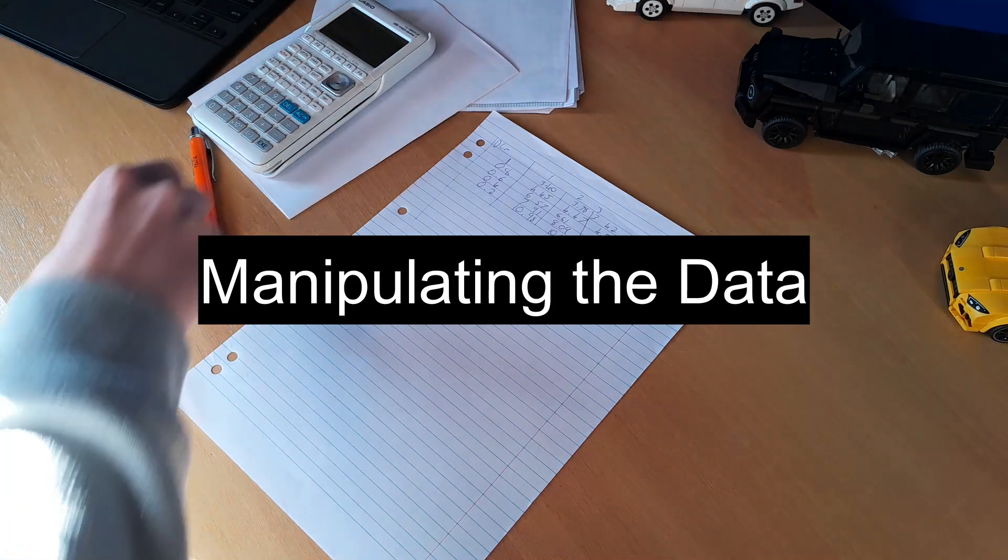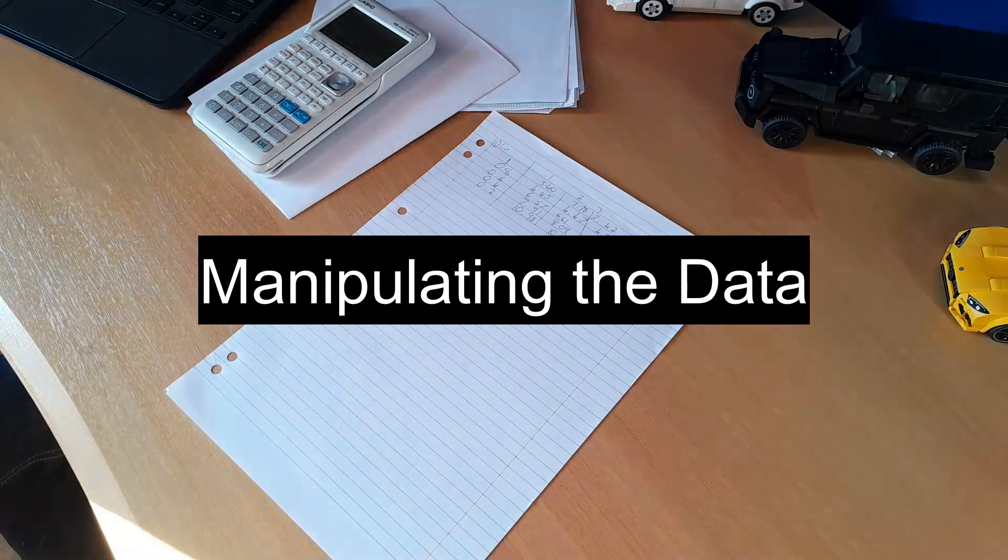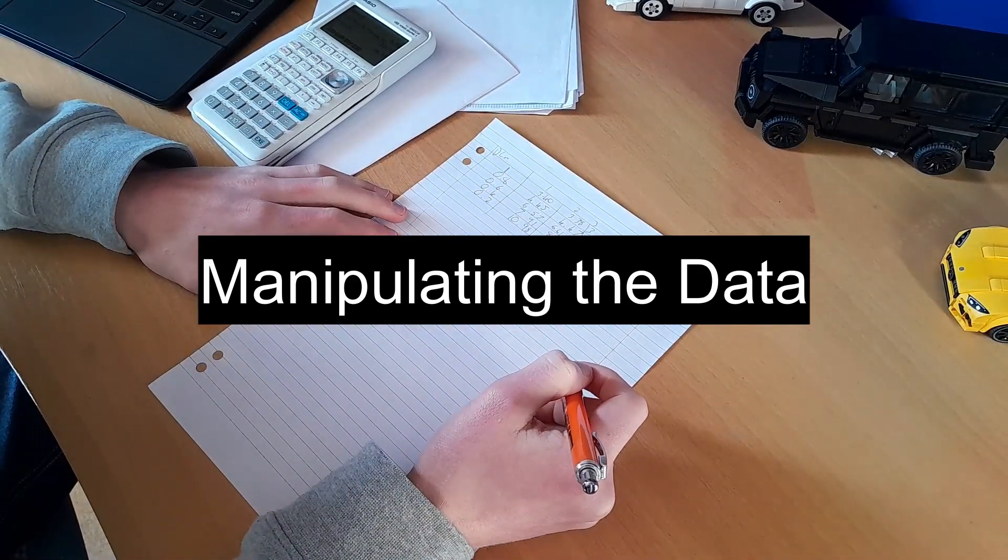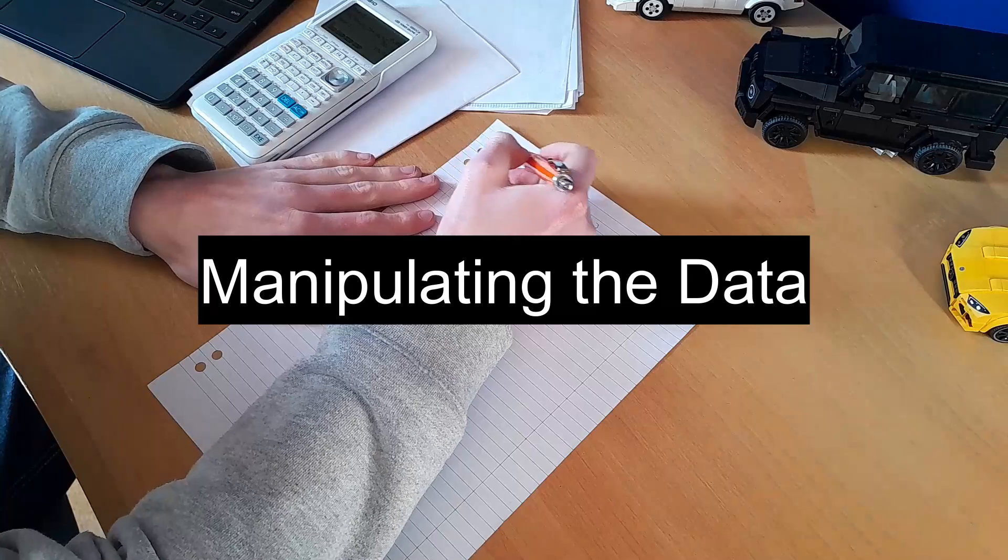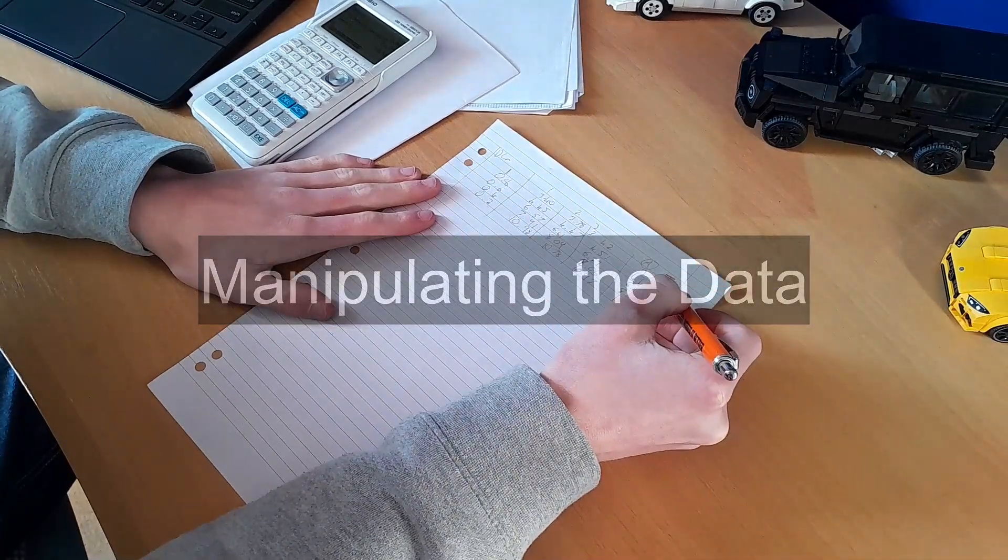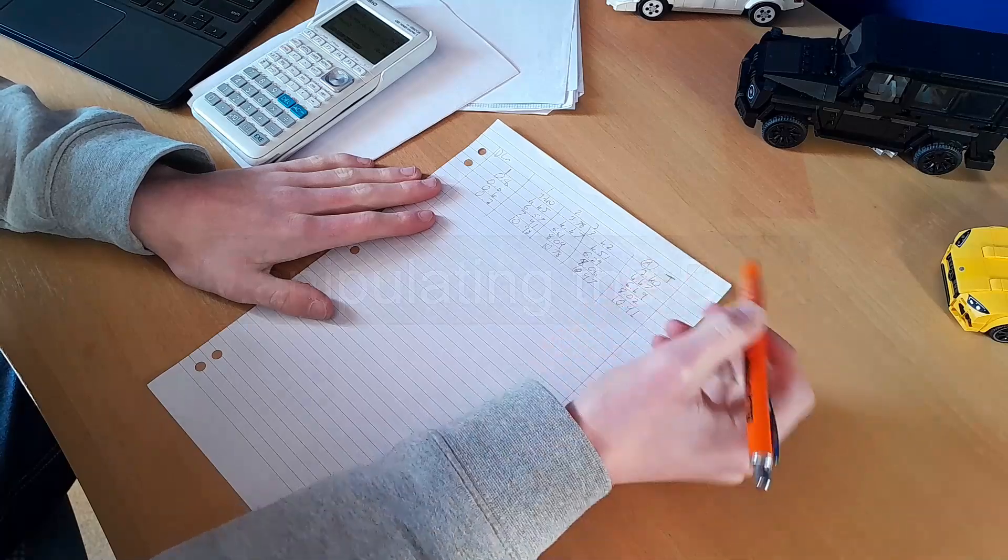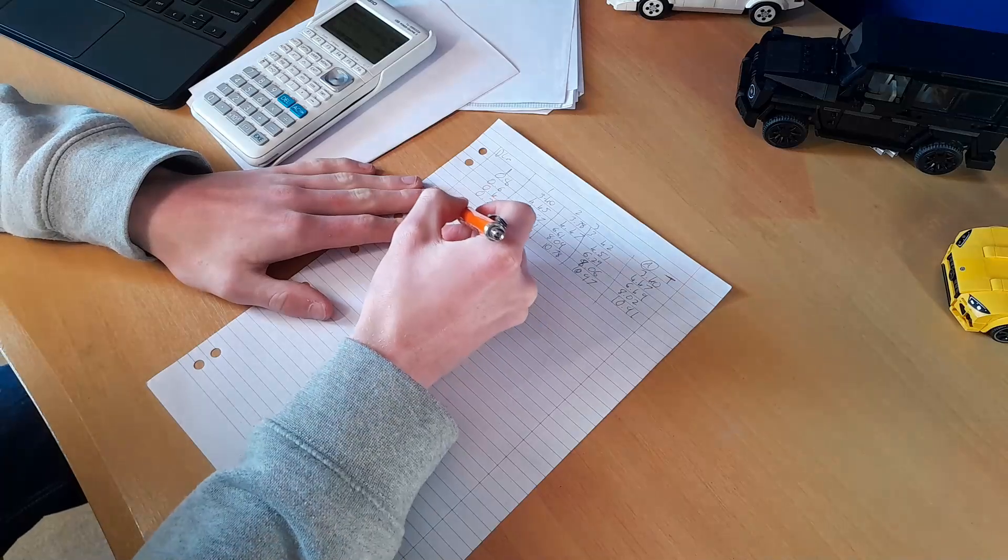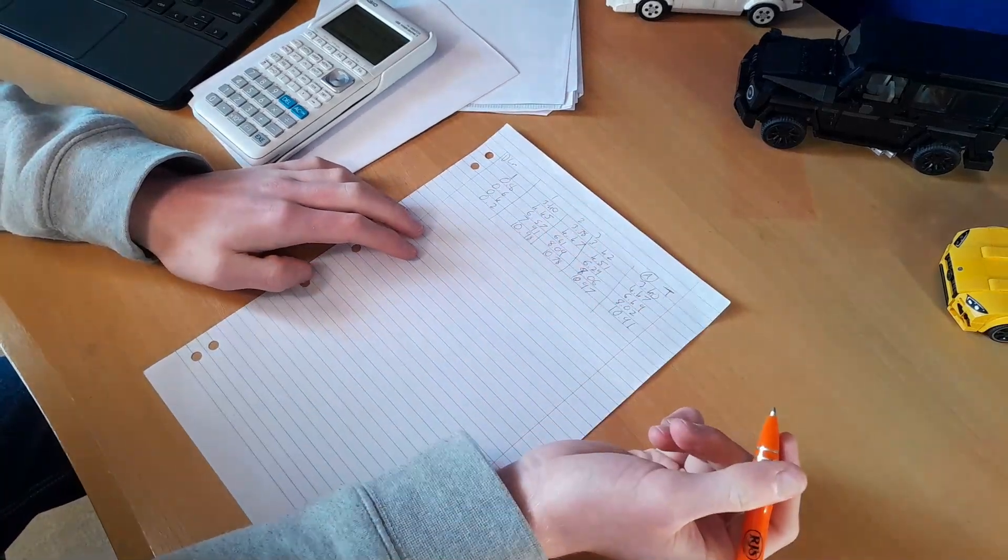So when we're doing our table and manipulating the data, we'll plot the graph using our distance and average, or t, and that will give us hopefully a curved line, but we want to make it a linear graph. So we do an inverse.